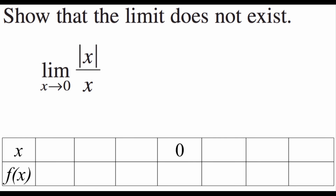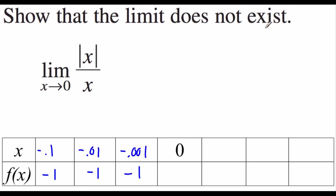Looking at this limit as x approaches 0, we'll show the limit does not exist. Approaching from the left: at negative 0.1, negative 0.01, and negative 0.001, we consistently get negative 1. Approaching from the right: at 0.1, 0.01, and 0.001, we consistently get positive 1. We're approaching two different numbers from each side, so this limit does not exist.